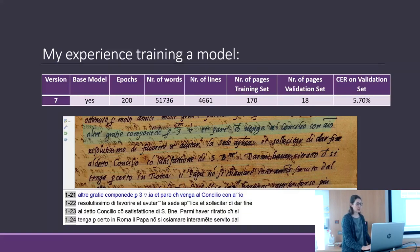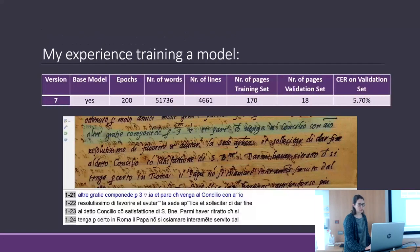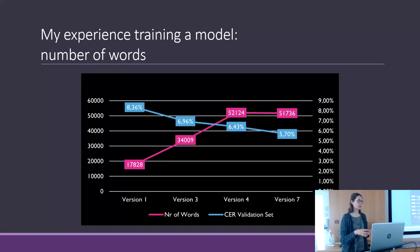Proofreading helps somewhat to improve the character error rate. Consistency is important — if you have an abbreviation or a sign in the document and you transcribe it in different ways, the machine is confused and doesn't know how to handle it.